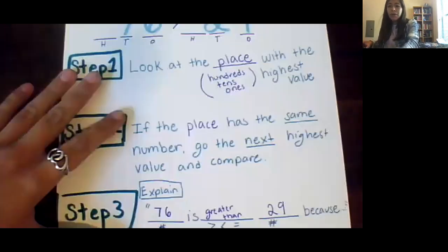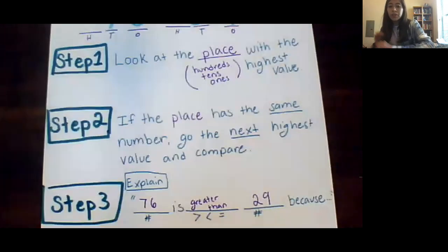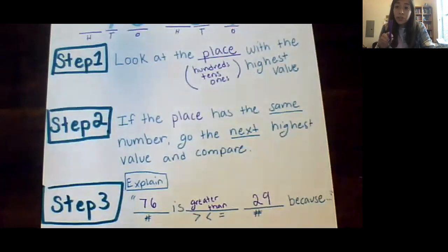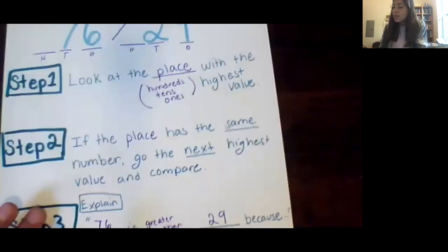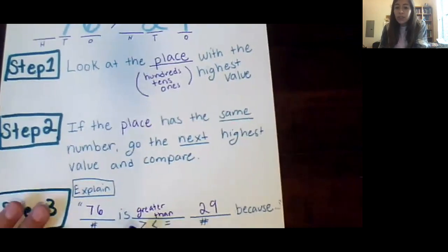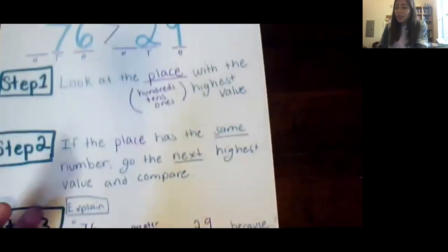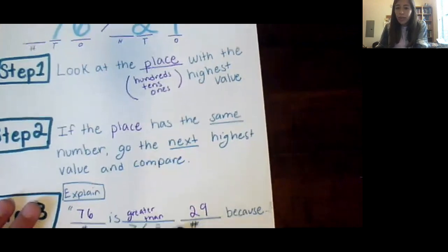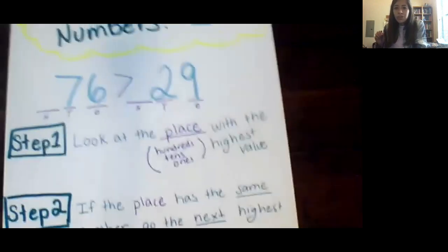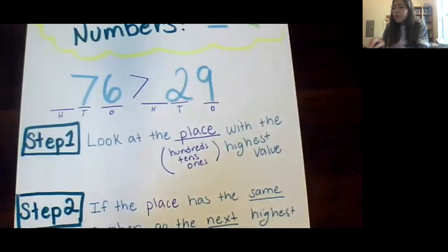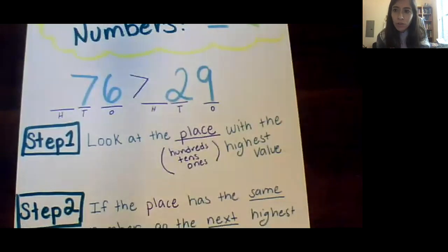So then we move on to step number three. It's time to explain. Now the first thing you're going to do is take your first number. For us it was 76. So 76 is, was it greater than less than or equal to? It was greater than. So 76 is greater than 29 because. So after using these steps how did we know that 76 is greater than 29?